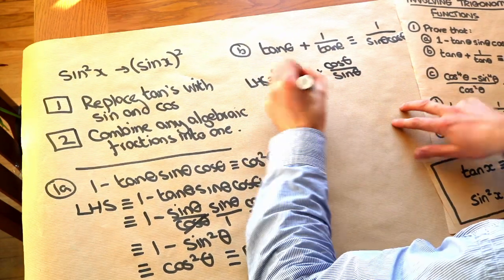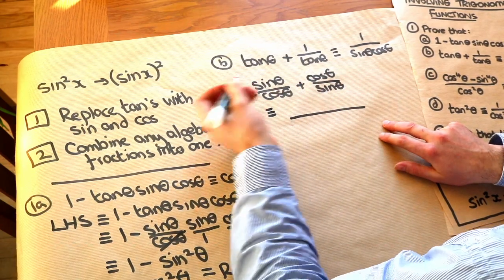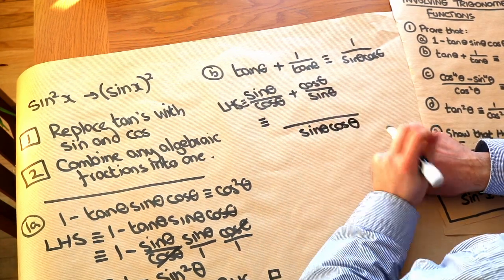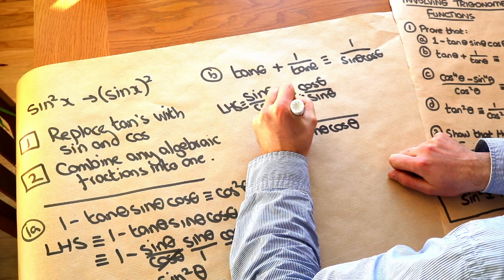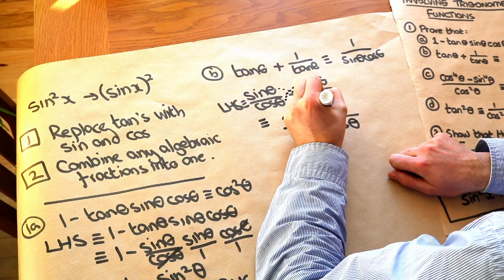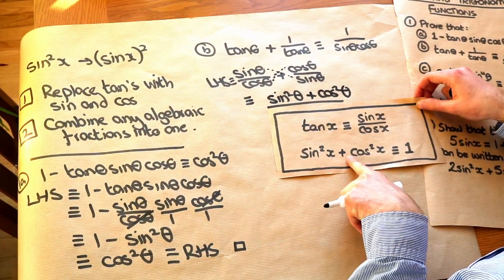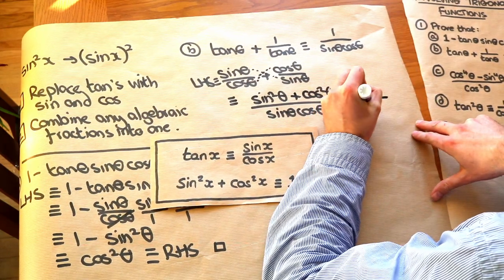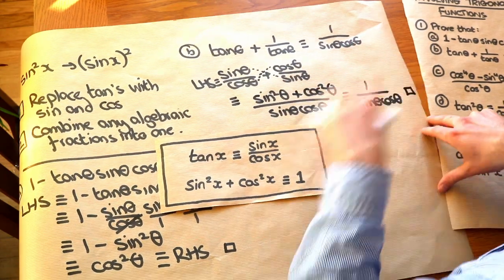As per tip 2, we want to combine any algebraic fractions into one. We multiply the denominators: cos theta times sine theta gives cos theta sine theta, written as sine theta cos theta. Then we cross-multiply the numerators: sine theta times sine theta gives sine squared theta, plus cos squared theta from the other diagonal. We know sine squared theta plus cos squared theta equals 1, so that just becomes 1 over sine theta cos theta, which is the right-hand side. Proof complete.